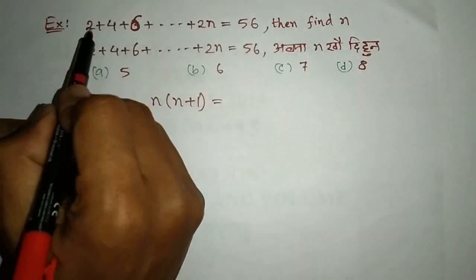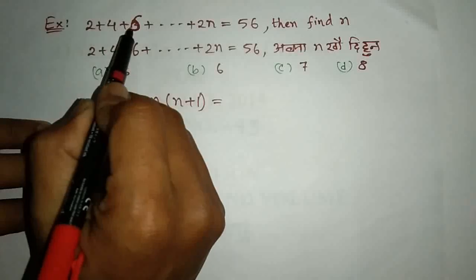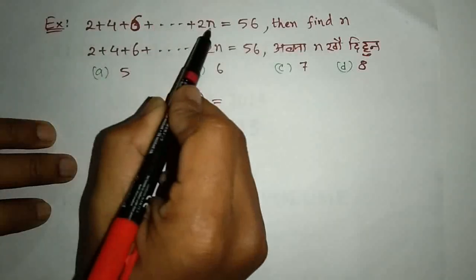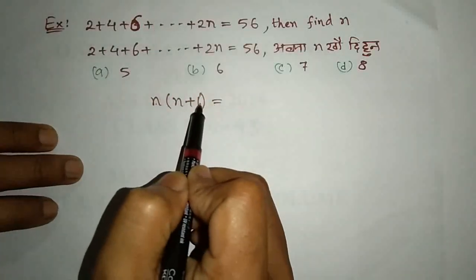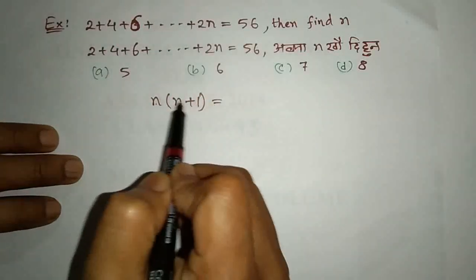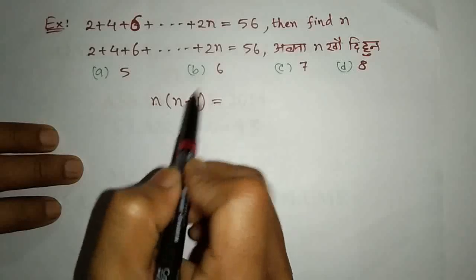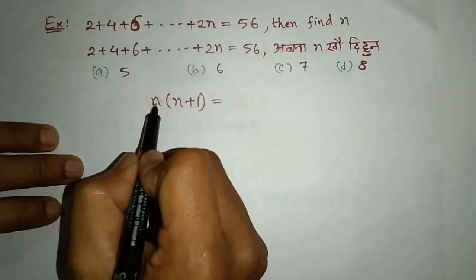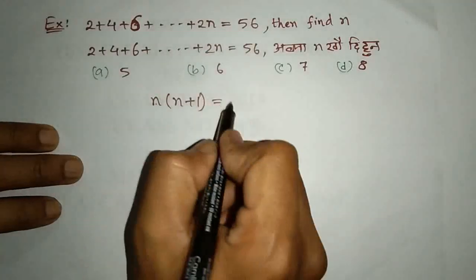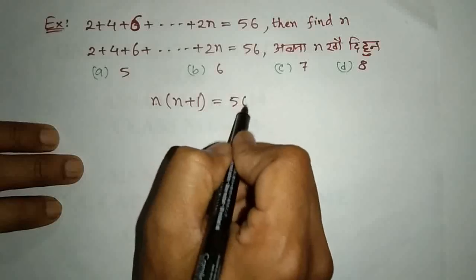That's why 2, 4, 6, 2n. This is n plus n. This is not 2x. The formula gives 56.